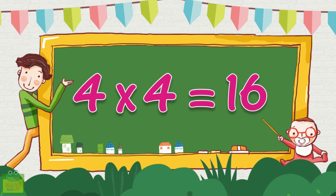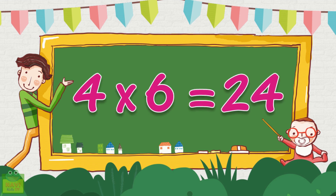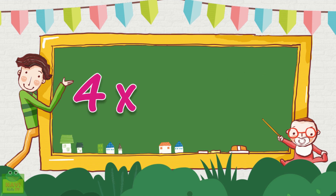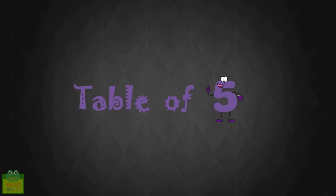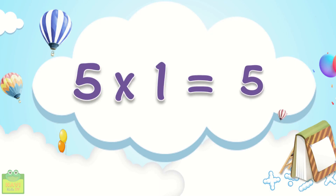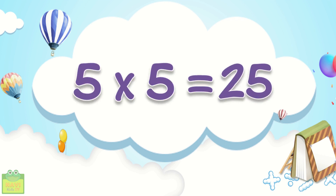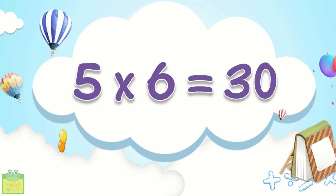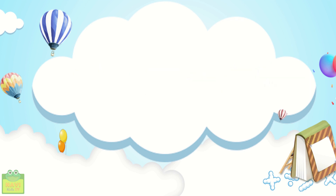4×4=16, 4×5=20, 4×6=24, 4×7=28, 4×8=32, 4×9=36, 4×10=40. Table of 5: 5×1=5, 5×2=10, 5×3=15, 5×4=20, 5×5=25, 5×6=30, 5×7=35, 5×8=40, 5×9=45, 5×10=50.